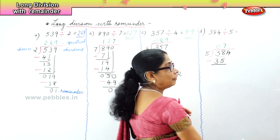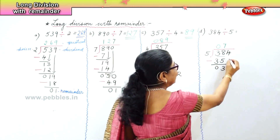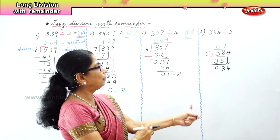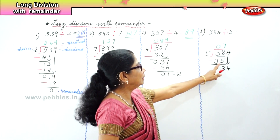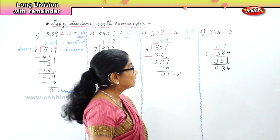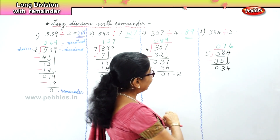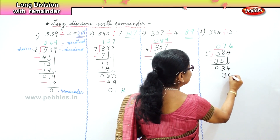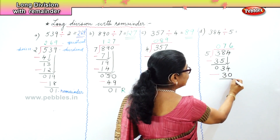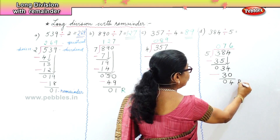Eight take away 5 is 3, 3 take away 3 is 0. Bring the 4 down — now we have 34. Five goes into 34 six times: six 5s are 30. Write minus 30. Thirty-four minus 30 is 4 — that is the remainder.